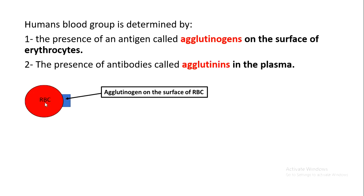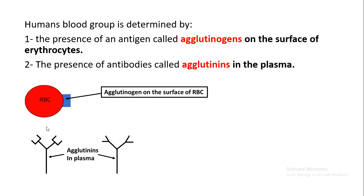The second factor that determines blood group is the presence of antibodies called agglutinins in the plasma. These antibodies, secreted by B lymphocytes, are present in the plasma and are called agglutinins. So there are two things found in the blood: the agglutinogen on the red blood cell membrane and the agglutinins in the plasma.